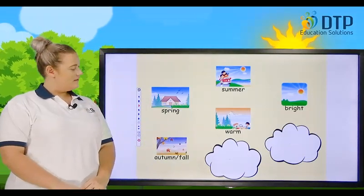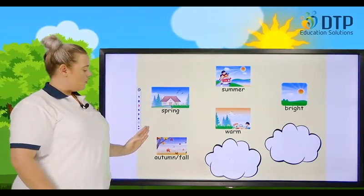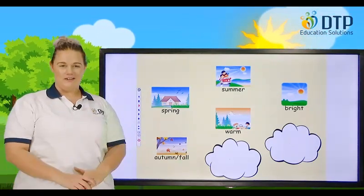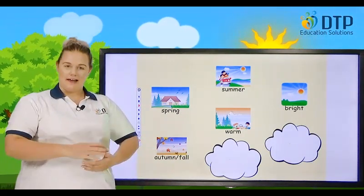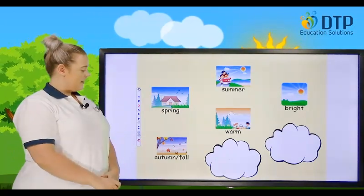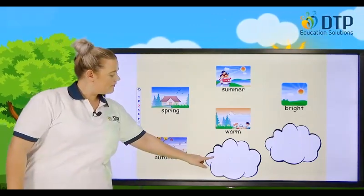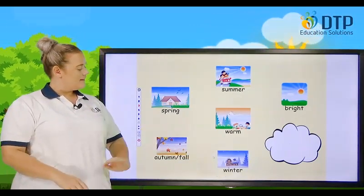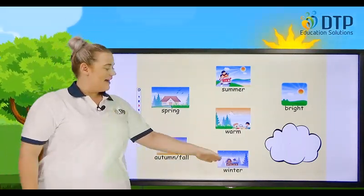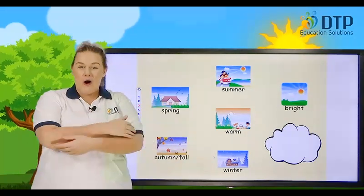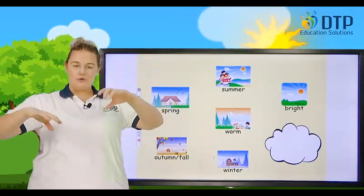Autumn, also called Fall. This is the third season of the year. It starts to get a little bit cooler in autumn, and the leaves fall off the trees. Winter. This is the fourth season of the year, the last season. It's very cold in winter. Sometimes it snows in winter.